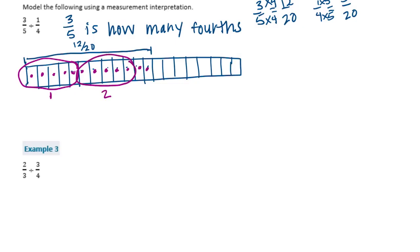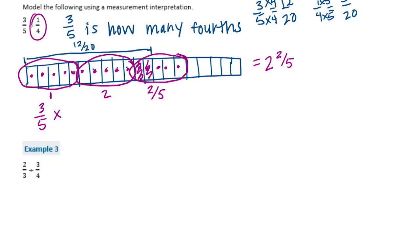We found two full groups of five-twentieths, but the third group only had two of its five parts within our original twelve-twentieths. So that's two out of five, giving us two-and-two-fifths. Using the invert and multiply method: three-fifths times four over one equals twelve-fifths, which equals two-and-two-fifths — a much faster way to get the answer.